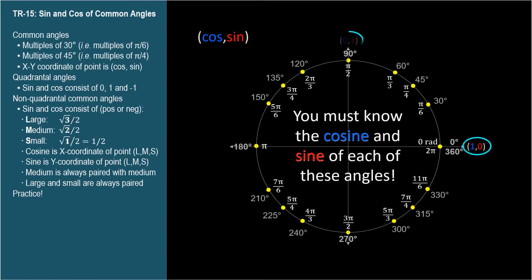The quadrantal angles should be trivial. Their coordinates are all zeros, ones, and negative ones. Cosine comma sine. So let's set those aside and focus on the other twelve angles.